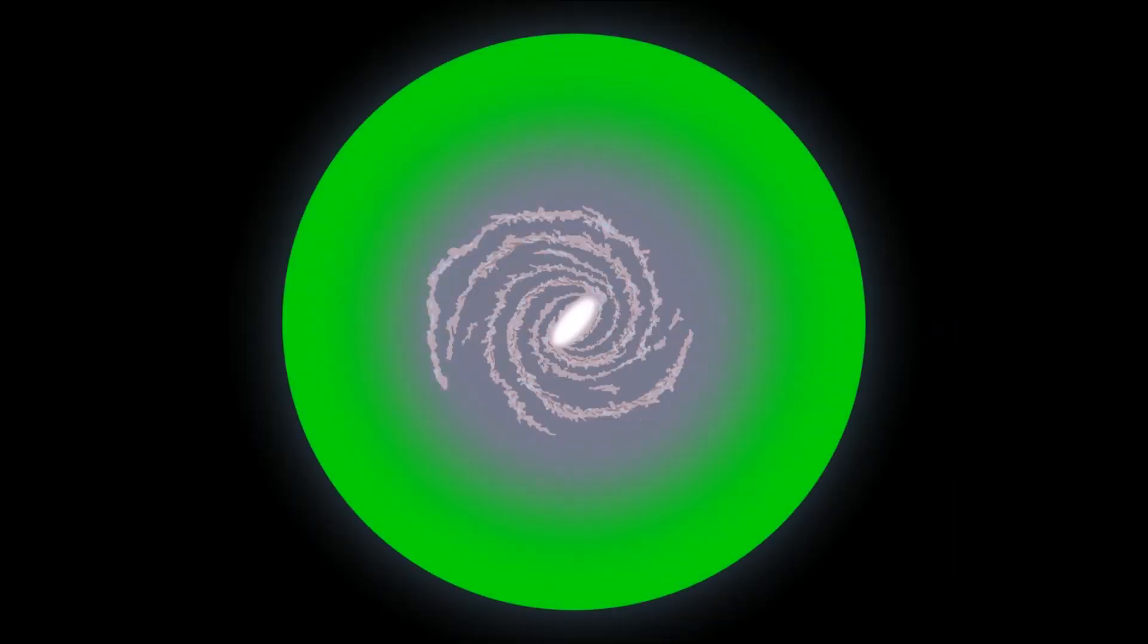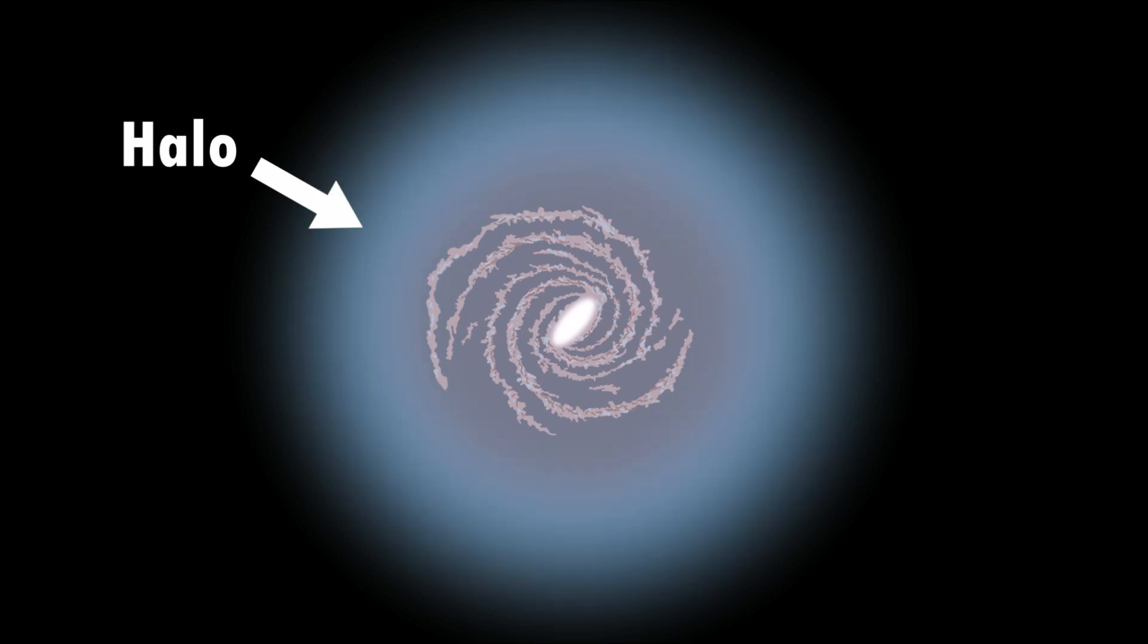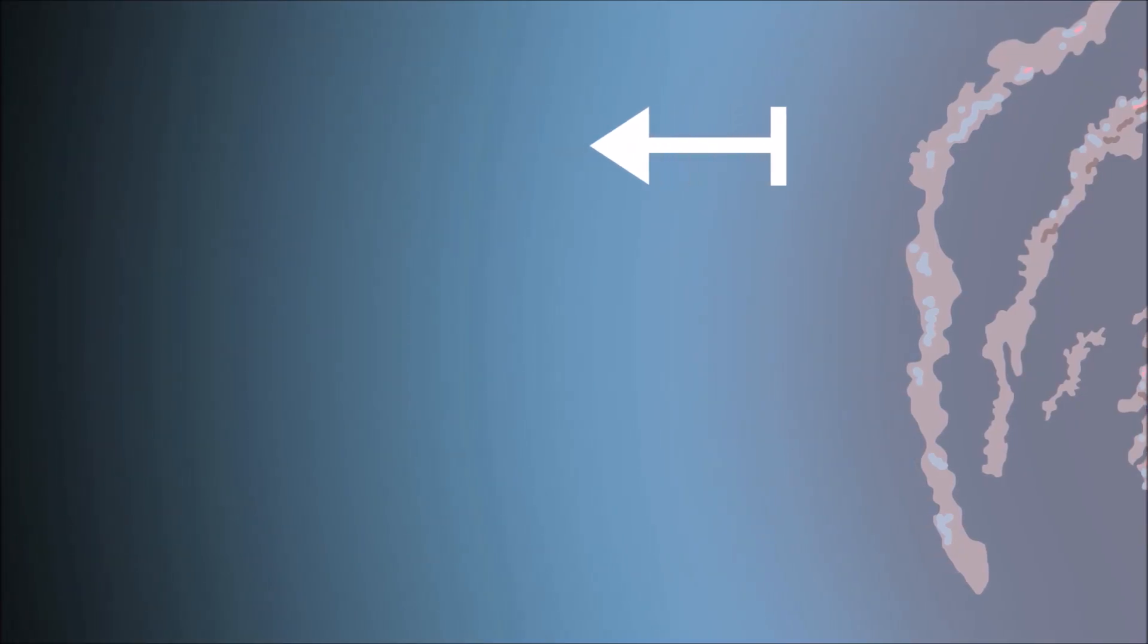The Milky Way is surrounded by an enormous halo! This halo is made up of hot gases and old stars! It stretches for hundreds of thousands of light years!